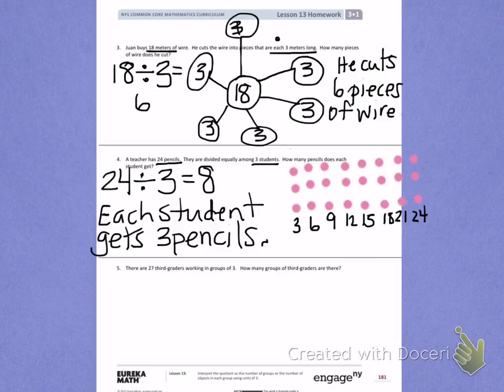Solve number 5 on your own. You may draw a tape diagram, a number bond, or an array to help you solve the problem. Be sure to write a number sentence and answer the question in a complete sentence with words.